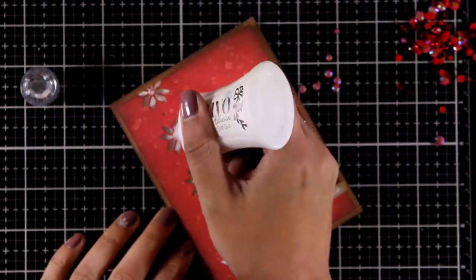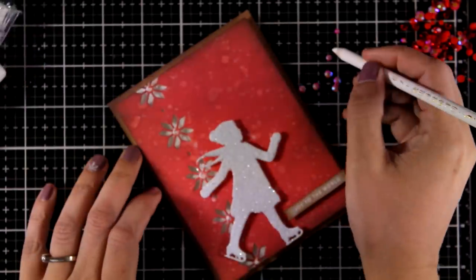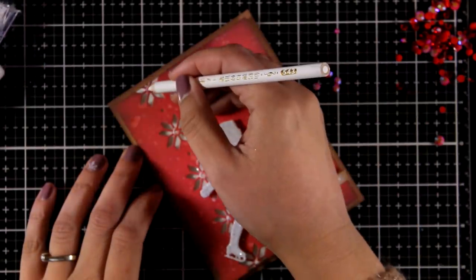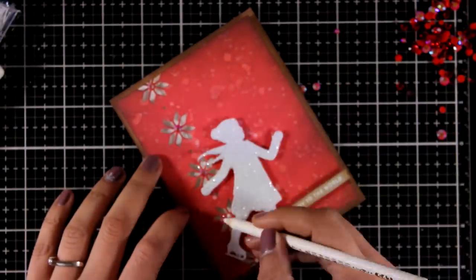To finish off my card I'm going to add a little bit more sparkle so I'm using here my Nuvo Deluxe to add dots of glue at the center of the snowflakes on my die cut design and then I'm going to stick there my Jewel Crystals by Studio Katia.